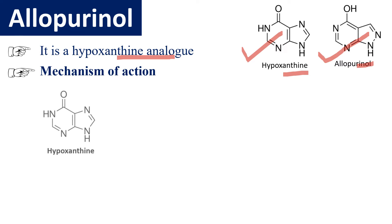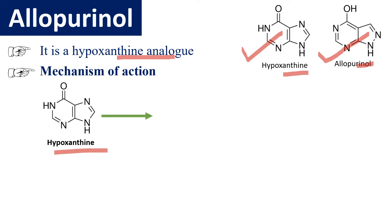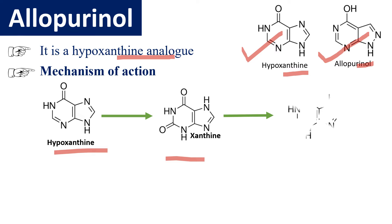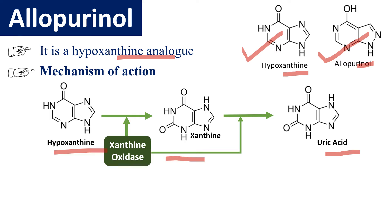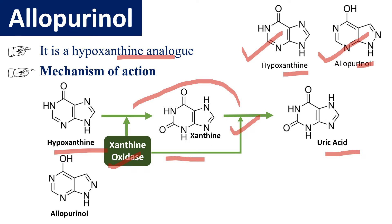In the body, hypoxanthine is converted into xanthine, which is again converted into uric acid, and this uric acid is excreted into urine. Conversion of hypoxanthine into xanthine is carried out with the help of the enzyme xanthine oxidase, and xanthine is later converted into uric acid also with the help of xanthine oxidase. This enzyme acts at two different steps.